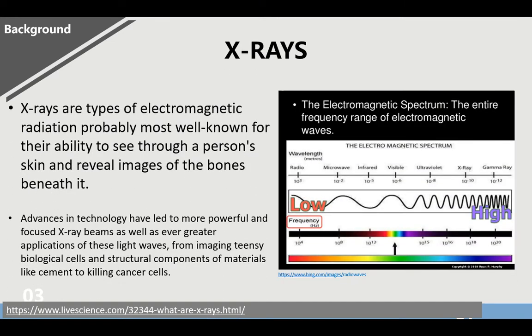X-rays are types of electromagnetic radiation, probably most well-known for their ability to see through a person's skin and reveal images of the bones, skin, and teeth. If we look on our electromagnetic spectrum chart, as you can see, X-rays are located in between ultraviolet rays and gamma rays.